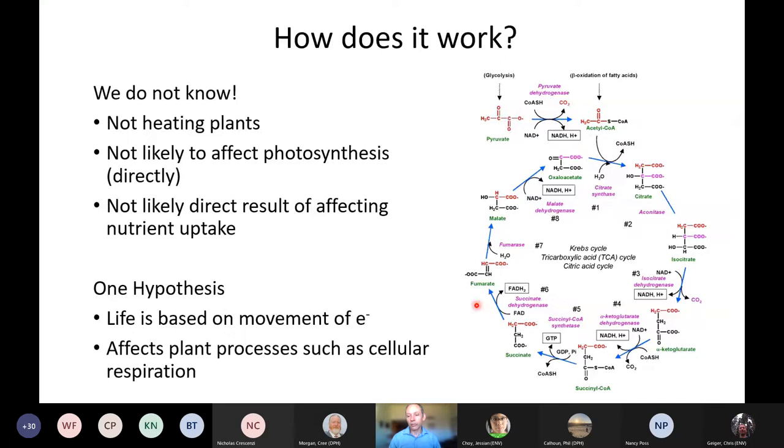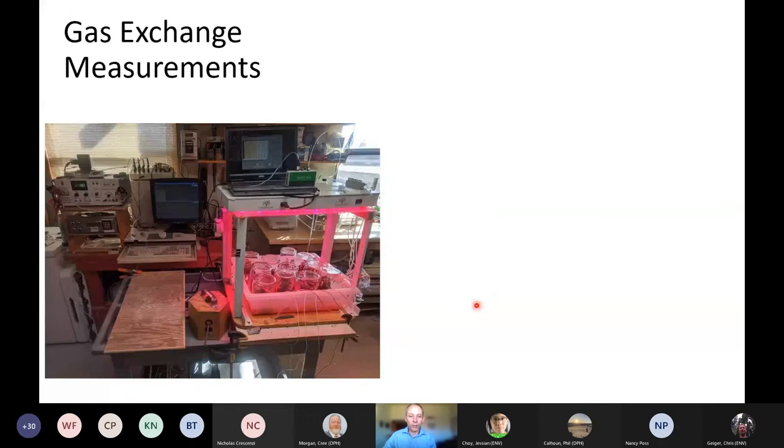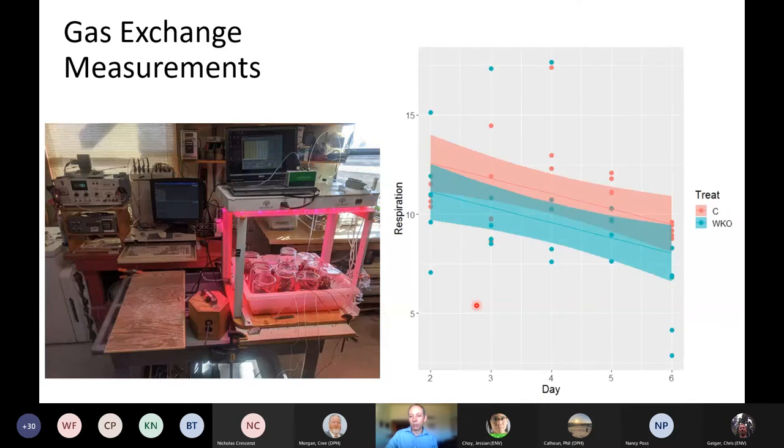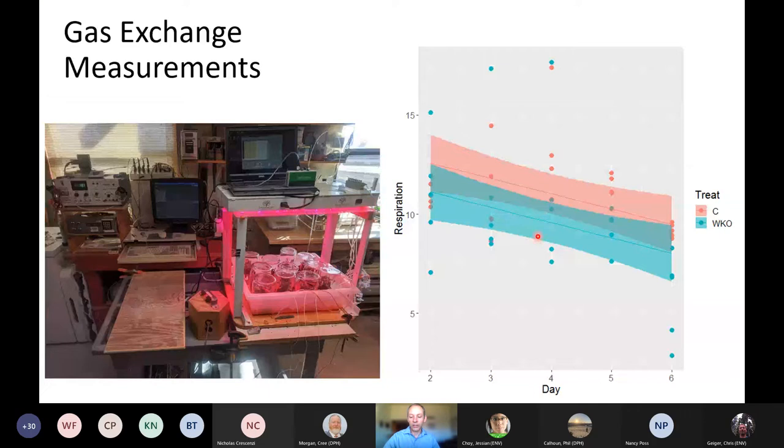So I won't go into too many details, but we did an experiment where we were treating plants in the laboratory and we had them in airtight chambers that we could measure photosynthesis and respiration in. And we found that in the treated plants, cellular respiration was lower than in the untreated plants. So it's doing something to respiration, but we're not sure if that's the cause of mortality or not.